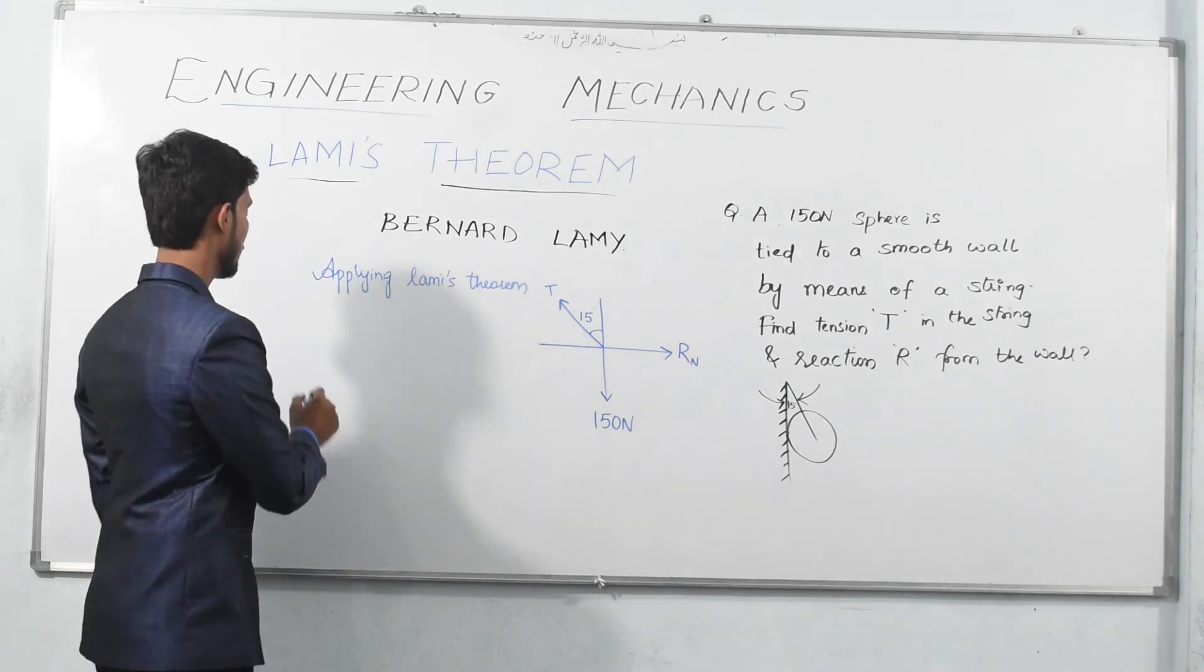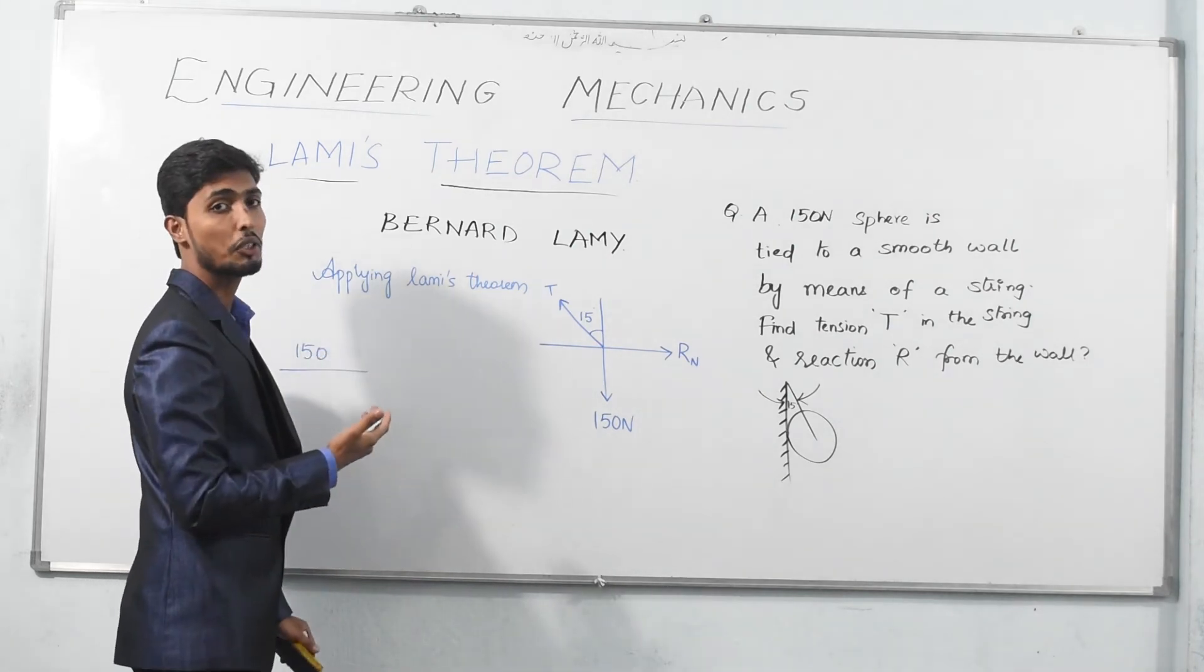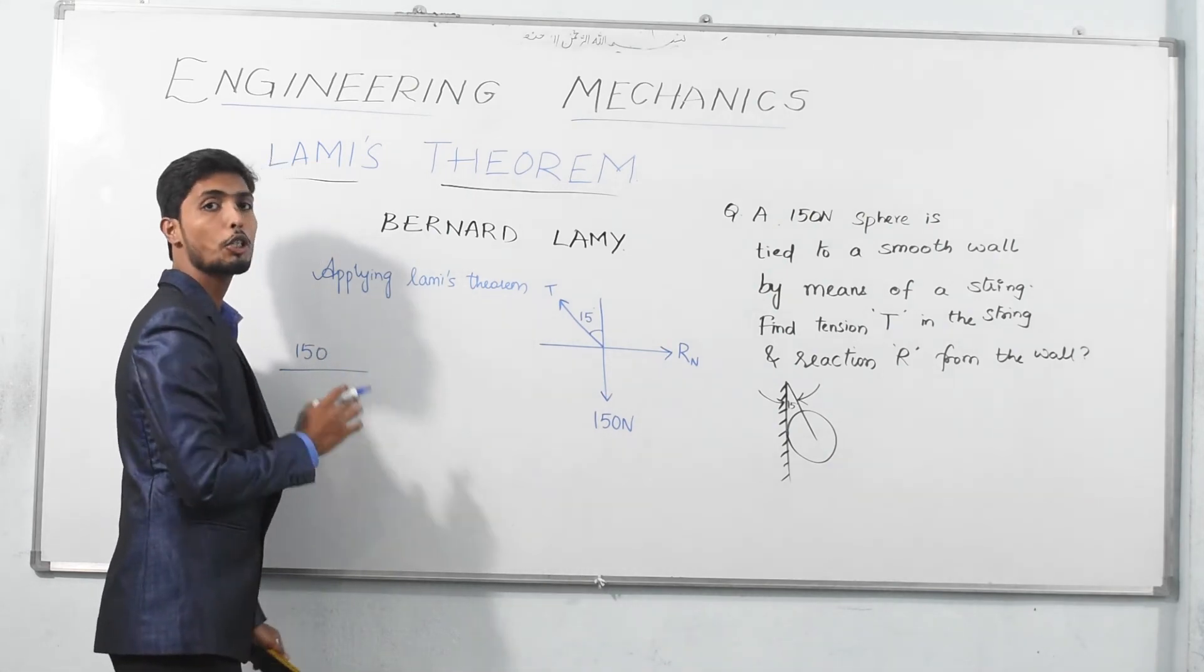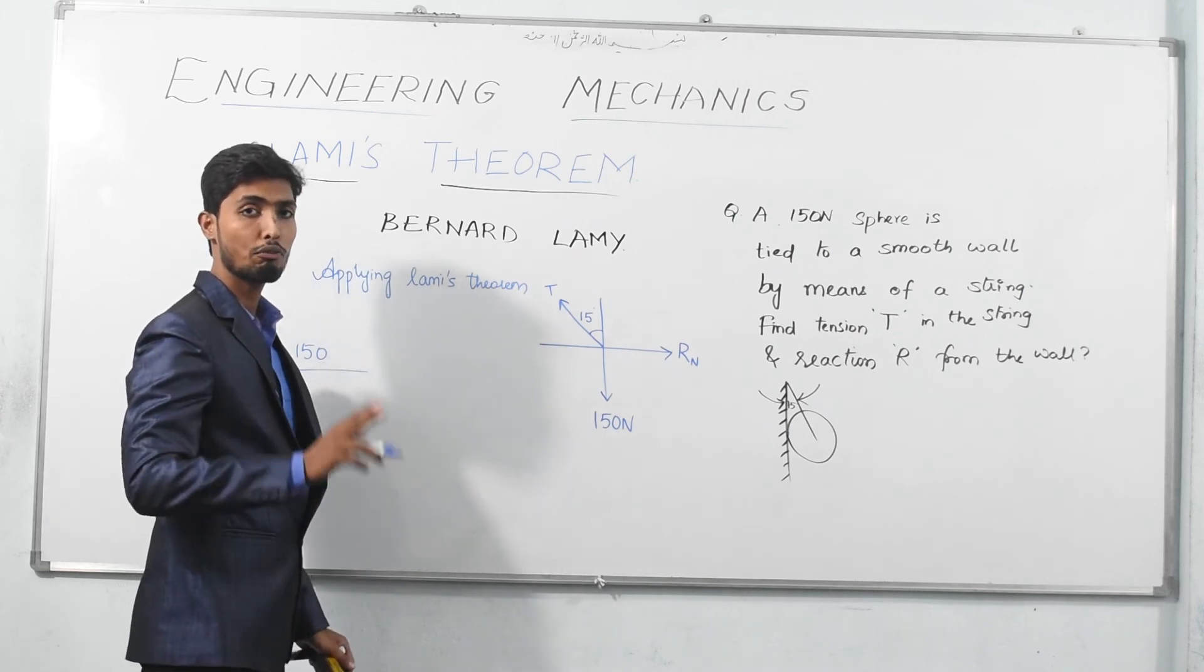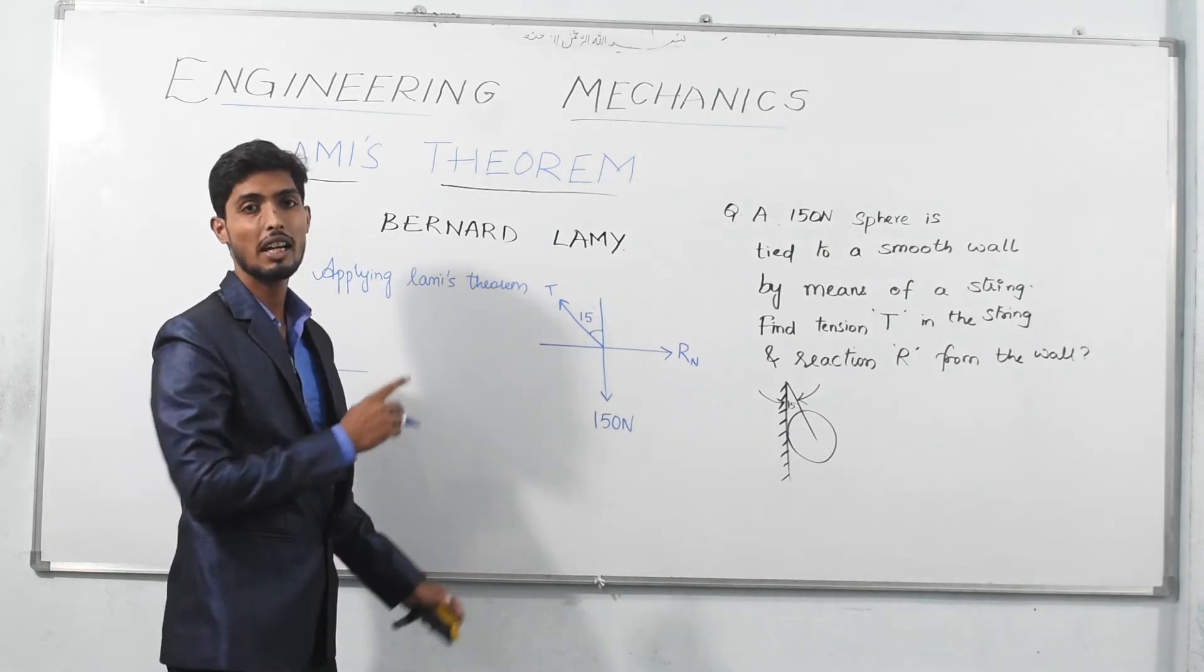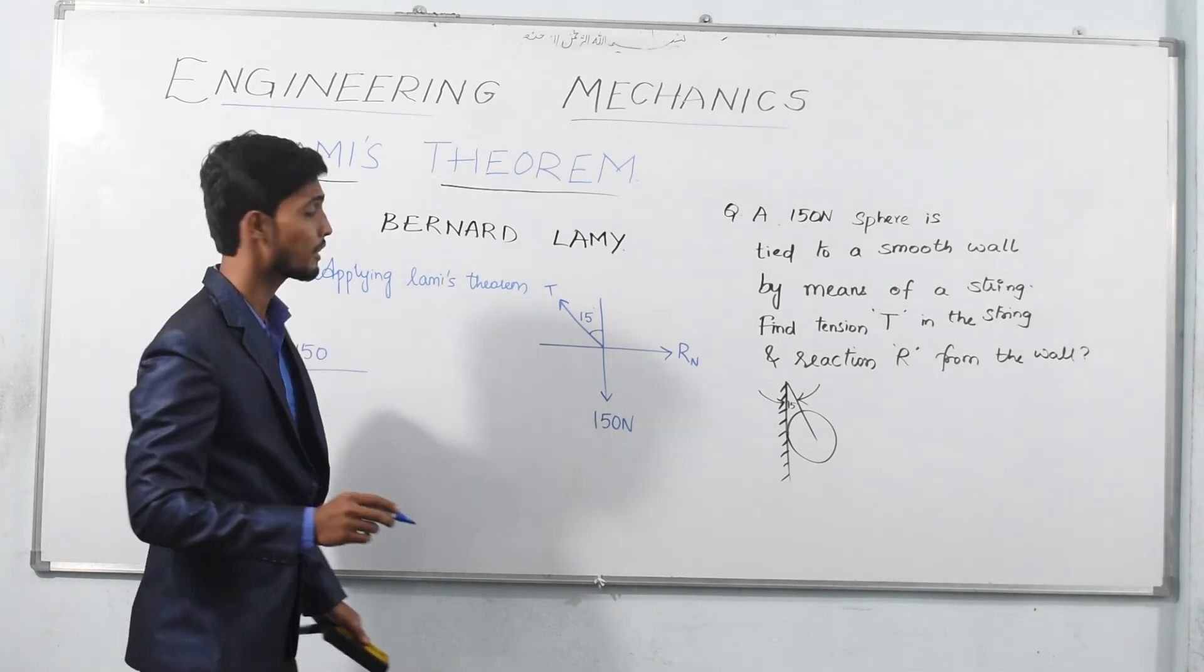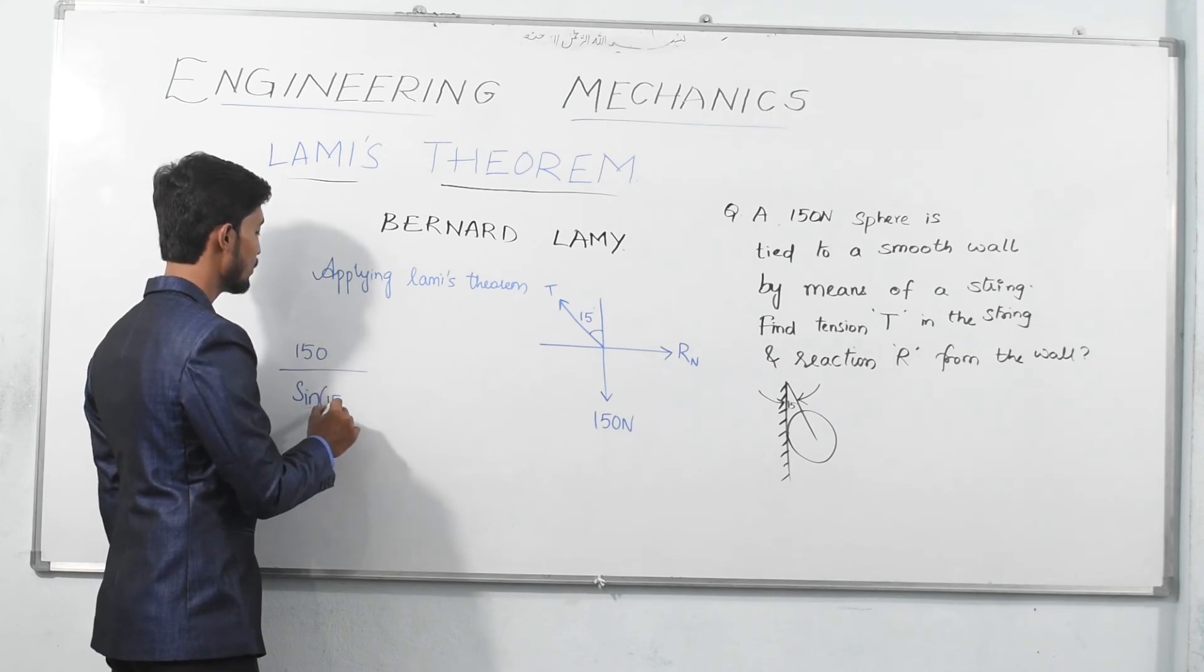If I consider weight first, as in the theorem I have mentioned A equals B equals C, while solving we will take numerical value first. So if I consider weight 150, you are left with two forces: tension and reaction. As you know, each and every quadrant substitutes to 90 degrees, so the leftover angle between tension and normal reaction would be 15 plus 90.